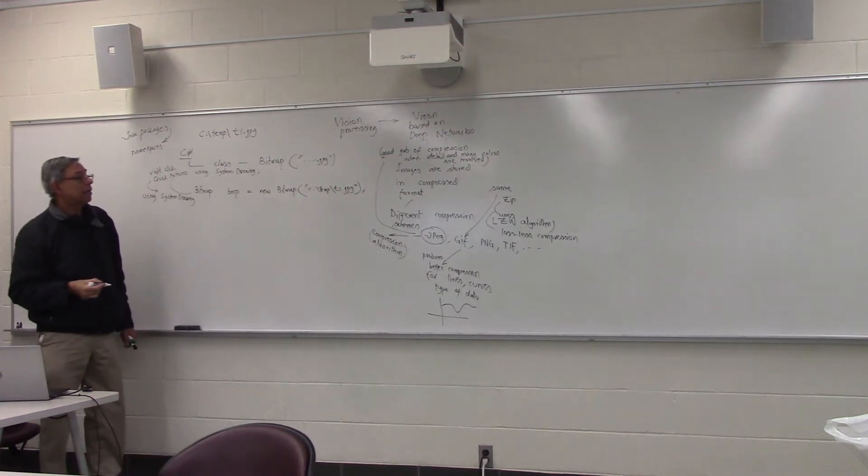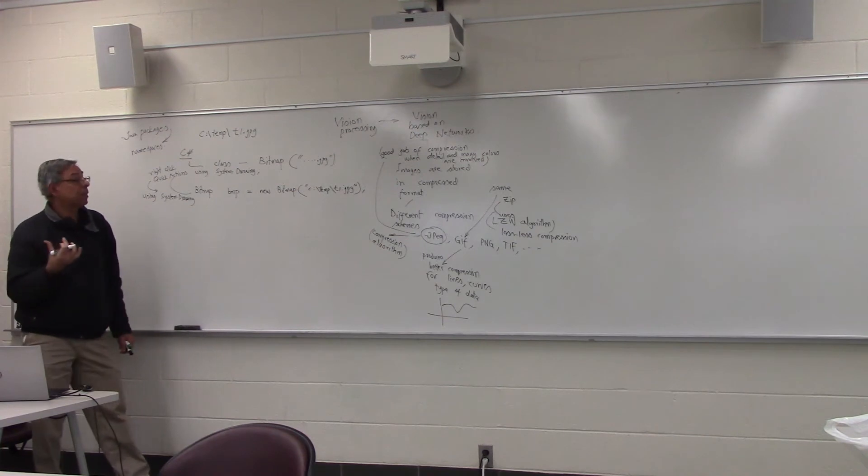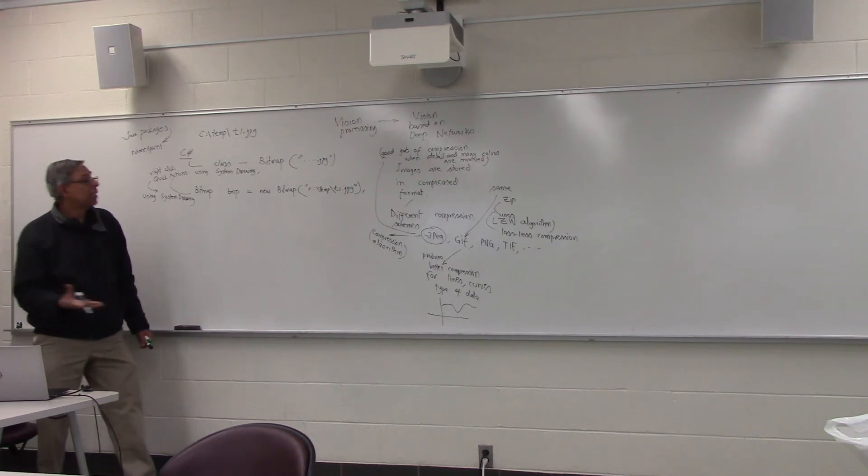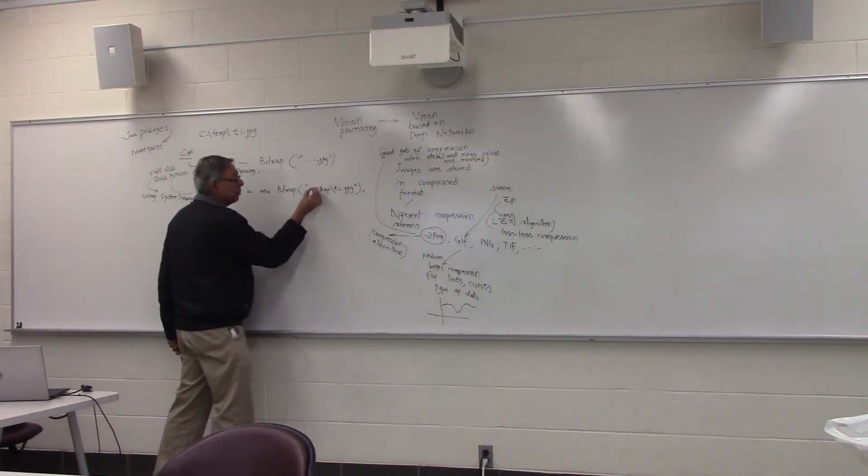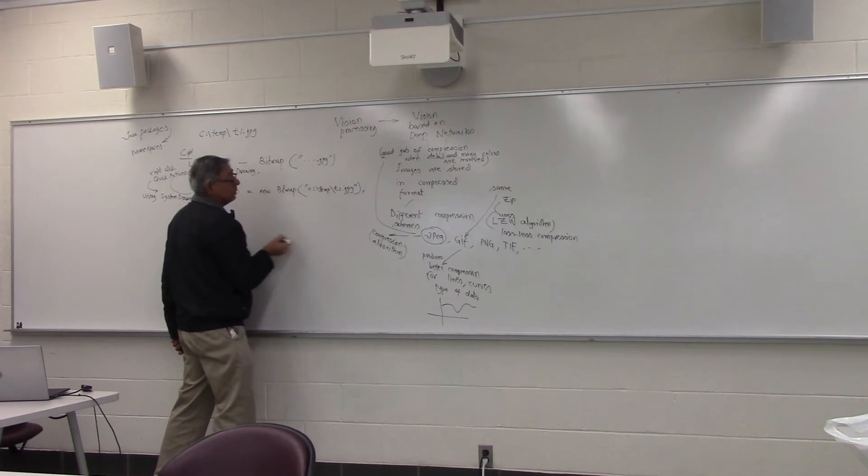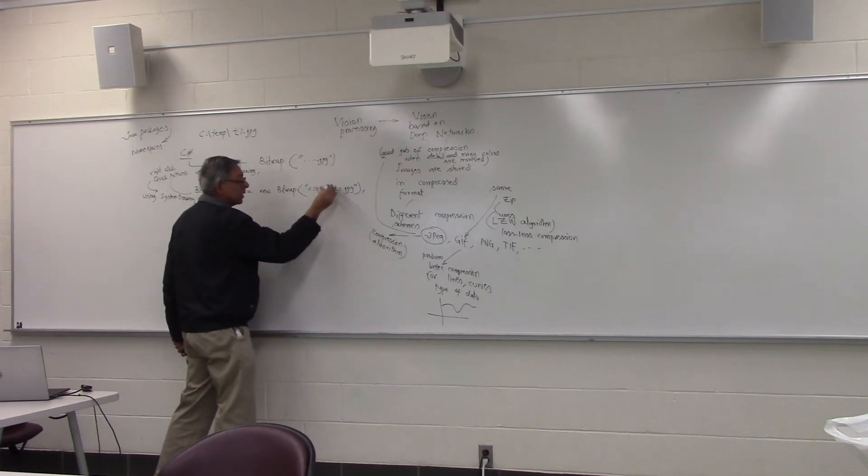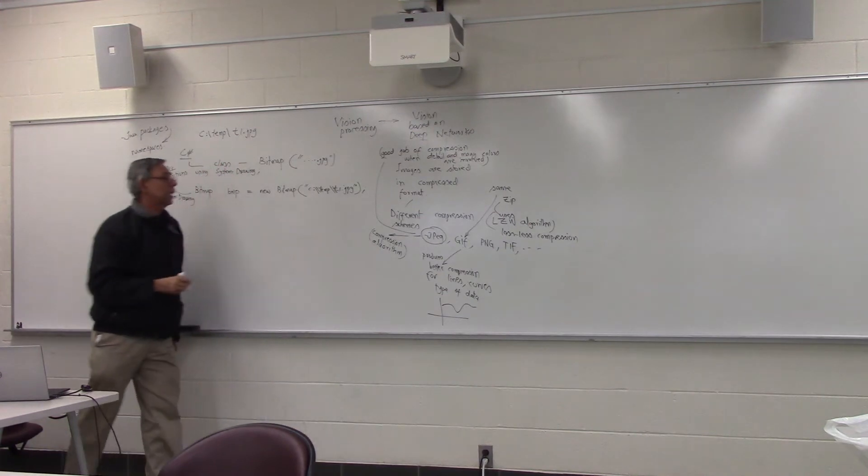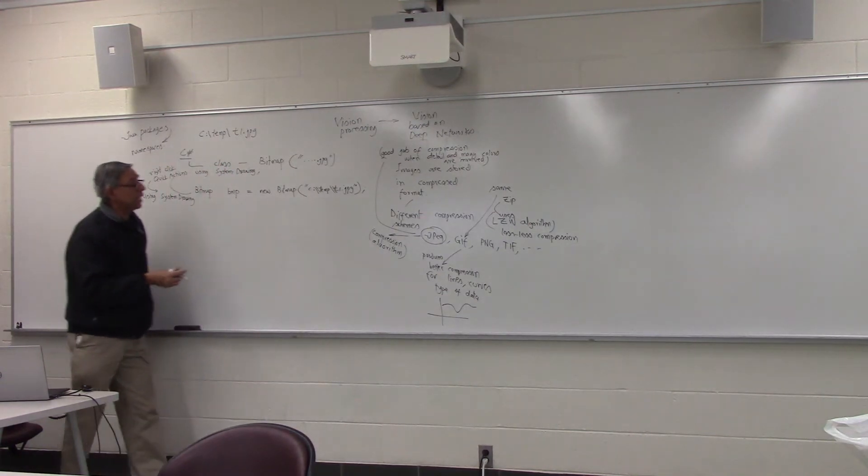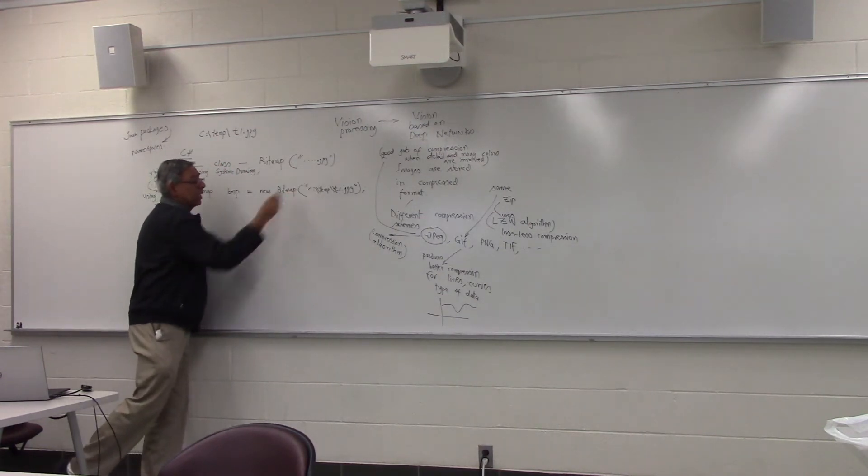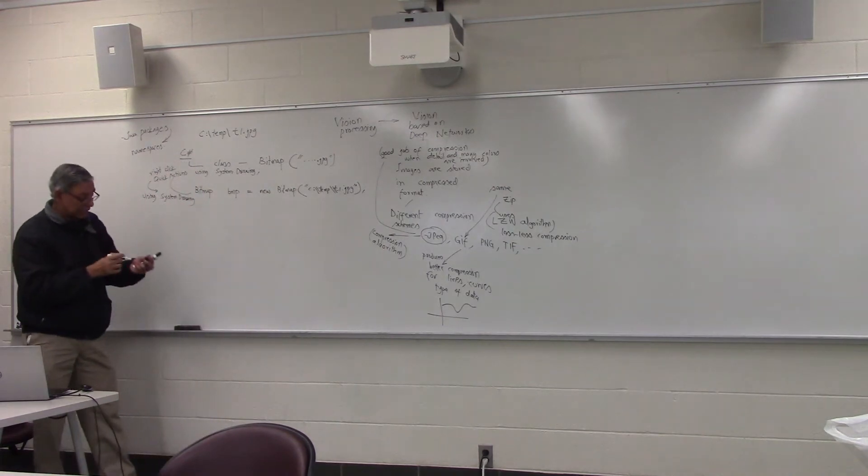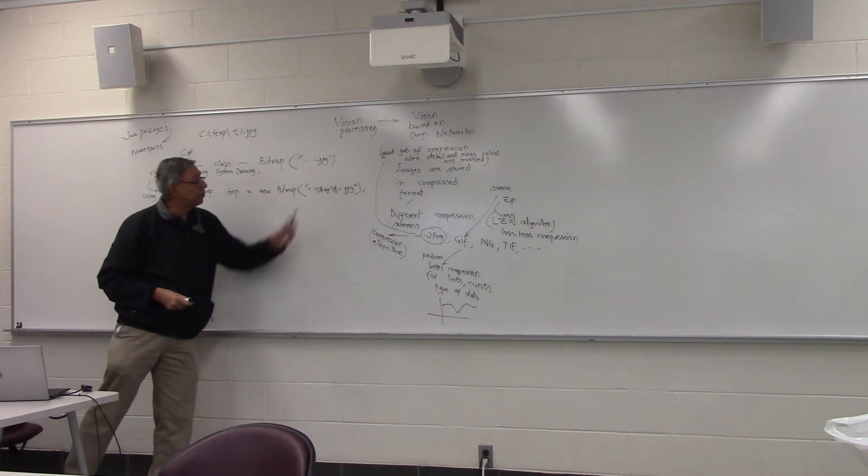Now, backslash is a problem character in C sharp exactly like Java, exactly like C. Anytime you need a single backslash, because backslash t will mean tab. Otherwise, you will put two backslashes. Or you can also put an at sign so that you use a single. But let's not make it too confusing for right now. Just use two backslashes.